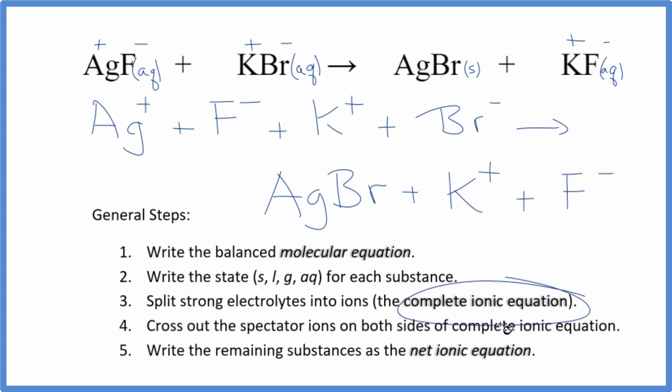So this is the complete ionic equation. Now we can cross out the spectator ions. They're on both sides of the complete ionic equation. Let's see. We have F- here in the reactants and in the products. So that's a spectator ion. We have the potassium ion in the reactants and in the products. Spectator ion, cross it out. What's left, that's the net ionic equation for AgF plus KBr.